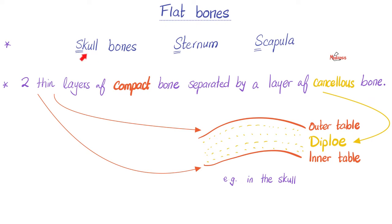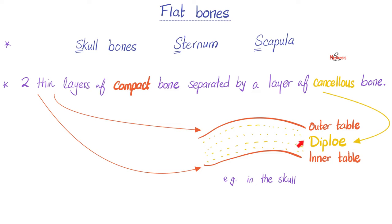Next, flat bones. All of them start with S, such as skull bones, sternum, and scapula. If I take a piece of skull bone, it has an outer layer known as the outer table, made of compact bone — very strong — and an inner table, also compact bone. Between them there is the less strong cancellous or spongy bone, known as the diploe.